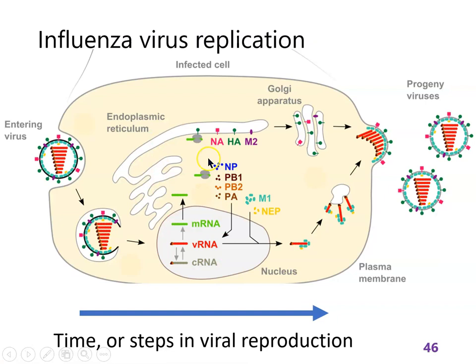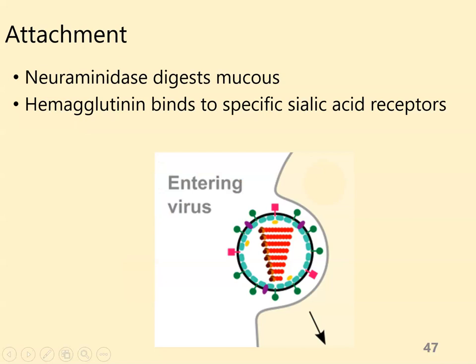This is the big diagram we're going to use to understand influenza virus replication, and I'll show it bit by bit. The way textbooks draw these processes is: first steps on the left, then later steps in the middle, and the last steps on the right. So the sequence is: attachment, penetration, uncoating, biosynthesis, maturation, and release. That's what's going on.